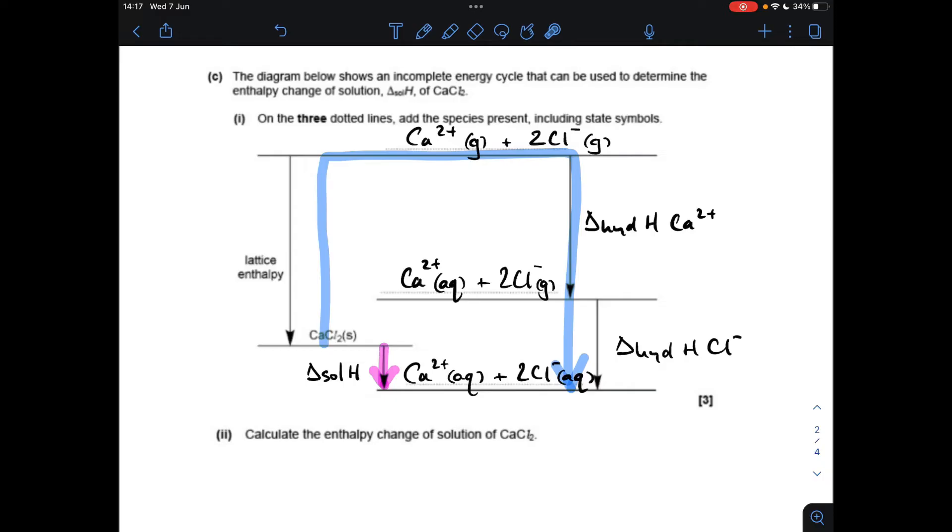So I'm just going to leave the cycle on the screen while I explain how the calculation works. You'll notice I've put two different colored arrows on. So we want to calculate the enthalpy change of solution, which I'm representing by this pink arrow here, so it starts there, finishes there. So the other way to get from here to here is around this blue route.